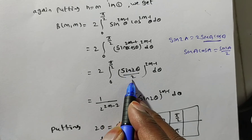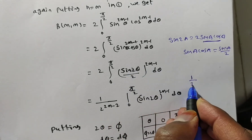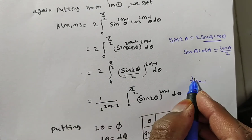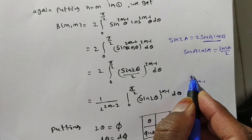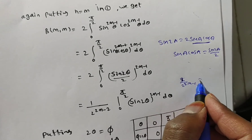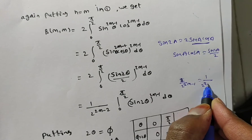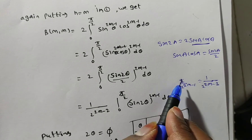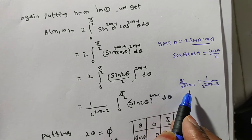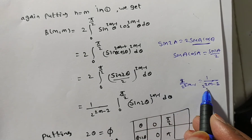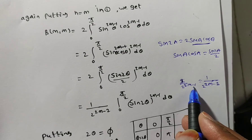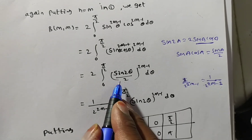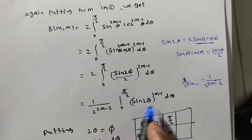We have (1/2)^(2m-1) outside, and already a factor of 2 present. The numerator 2 cancels one power from the denominator, so the combined constant becomes (1/2)^(2m-2), which equals 1 over 2^(2m-2). This simplifies to 2^(-(2m-1)+1) = 2^(-(2m-2)). We are left with: a constant times the integral from 0 to pi/2 of sin 2theta to the power 2m minus 1 d theta.